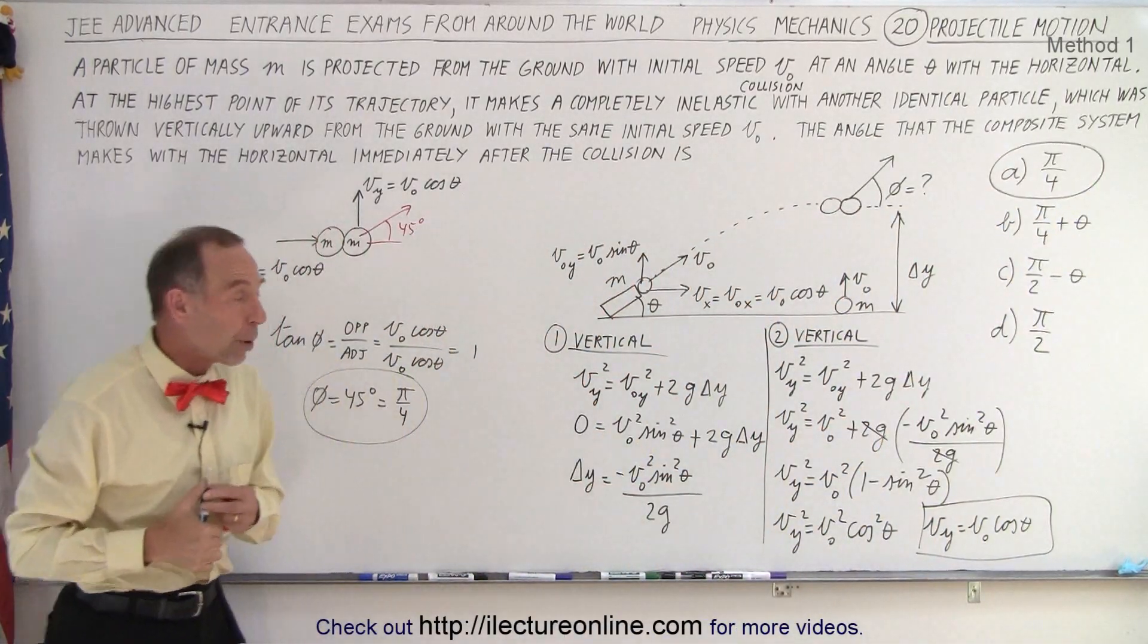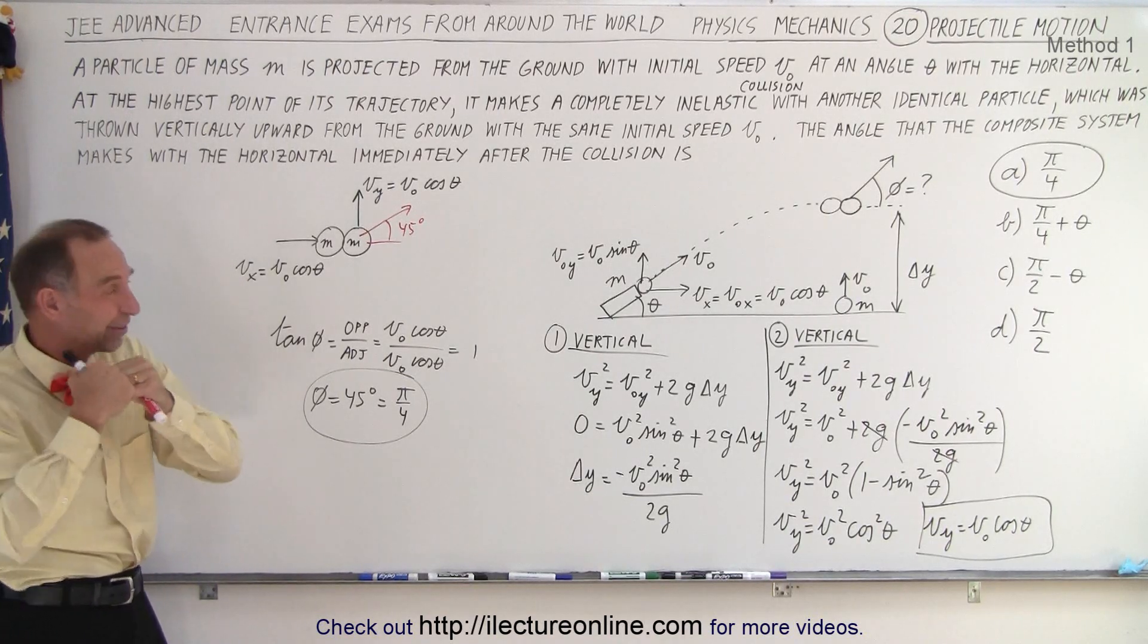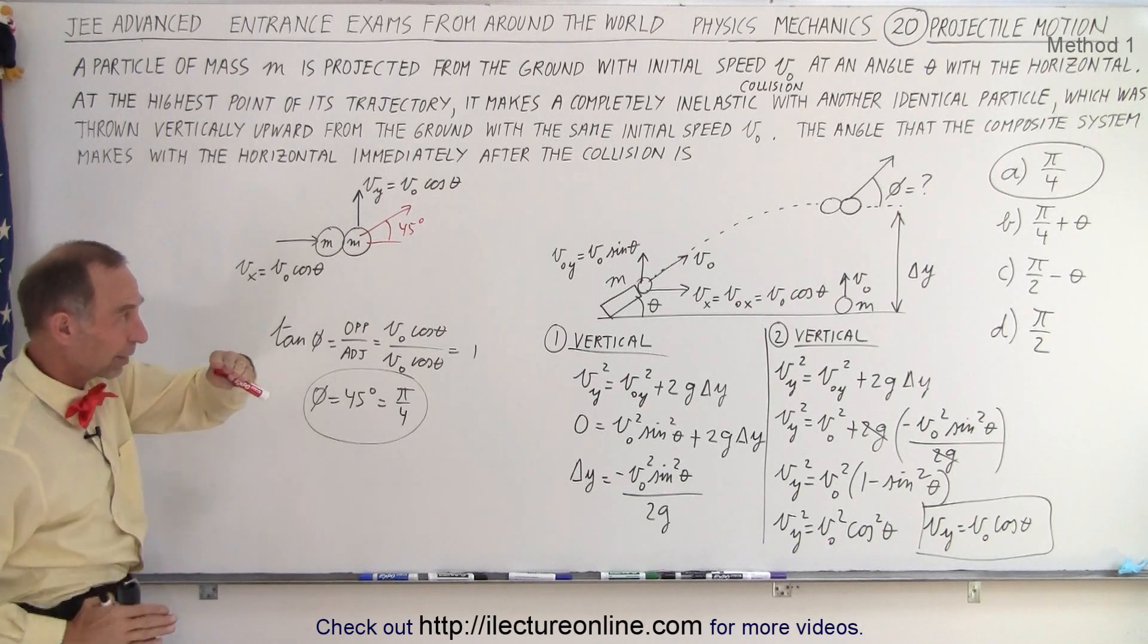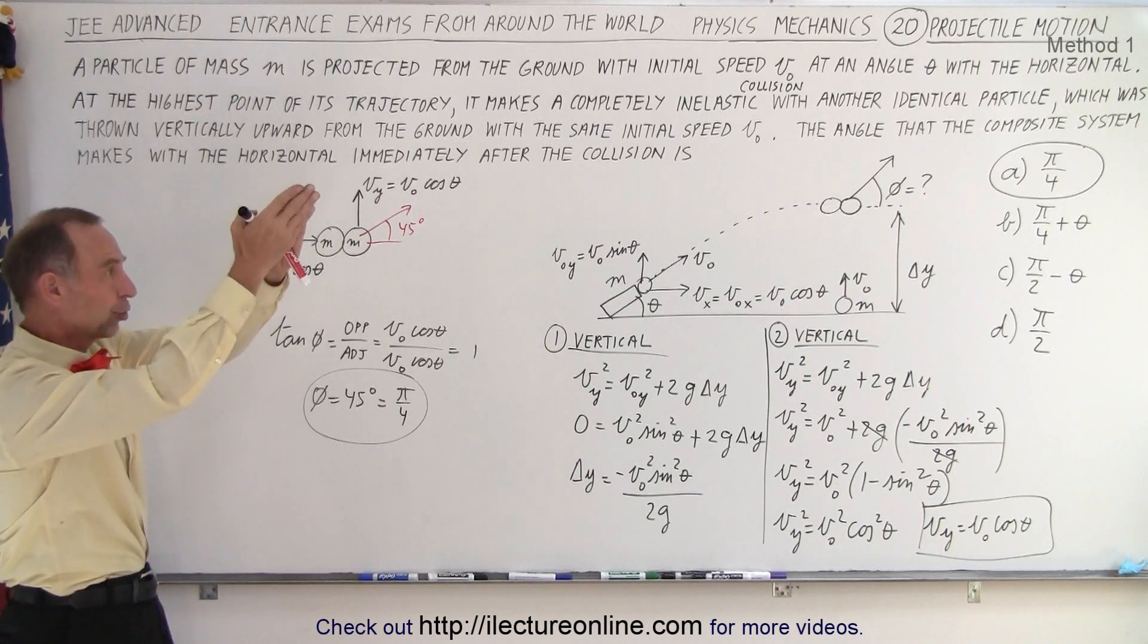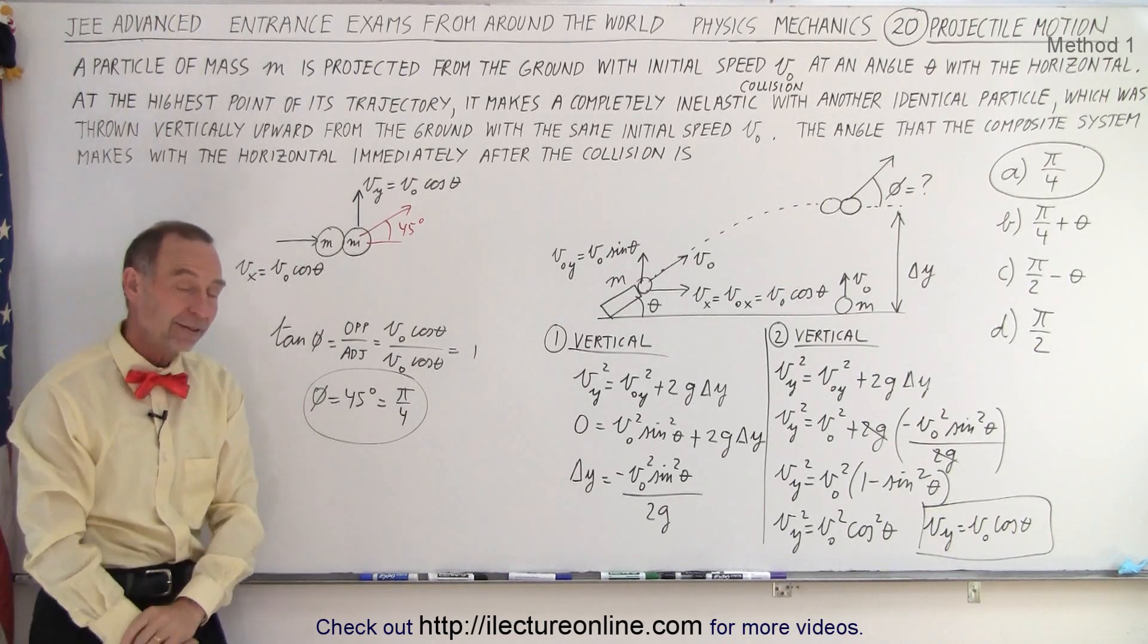Which means when they both get to the same point in the sky, they will hit each other with the very same velocity. One going horizontally, one going vertically. And so, they will shoot off at an angle of 45 degrees after the collision. And that is how it's done.